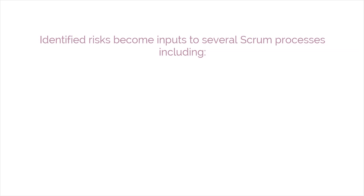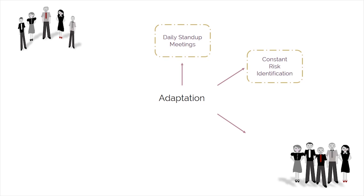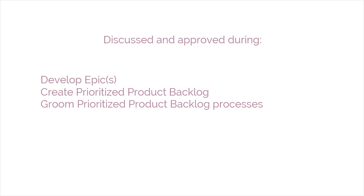Risk identification is performed and iterated throughout the project. Identified risks become inputs to several Scrum processes, including Create Prioritized Product Backlog, Groom Prioritized Product Backlog, and Create Sprint Backlog. Improvements can also result in Change Requests, which are discussed and approved during the Develop Epics, Create Prioritized Product Backlog, and Groom Prioritized Product Backlog processes.